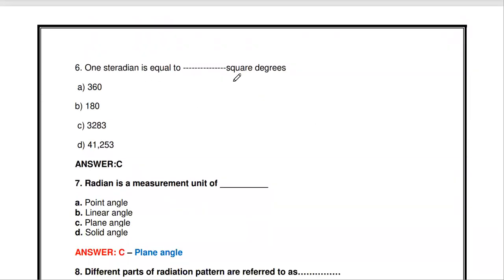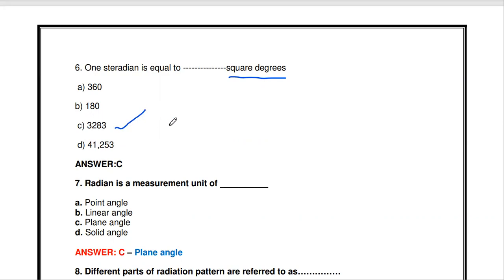One steradian is equal to how many square degrees? The options are 360, 180, 3283, or 41253. The answer is 3283. This is actually 3282 point something, rounded off to 3283. So one steradian is equal to 3283 square degrees.